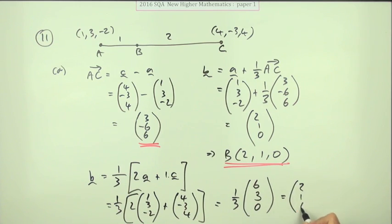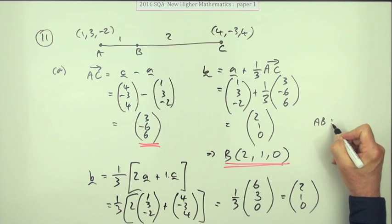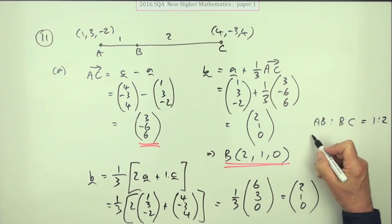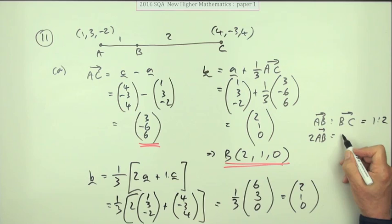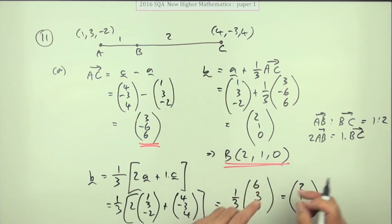There's a third way where you'd say AB to BC is in the ratio 1 to 2, getting 2AB equals BC, then split them up, and you end up with the same answer. I prefer the first method; failing that, the section formula.